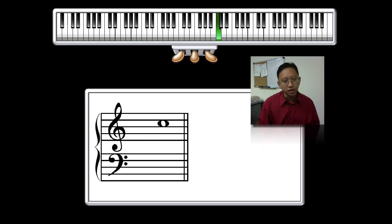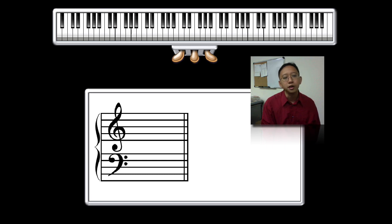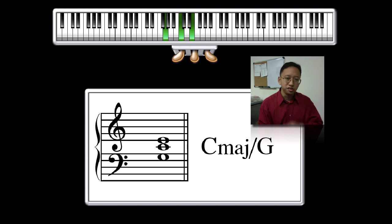So I could invert that yet again to what we call the second inversion, and that would be G-C-E. Same three letters, but now with G on the bottom, hence C major slash G. It doesn't matter where I play it on the piano, if I play it down an octave here or even with my left hand, it's still C major slash G.